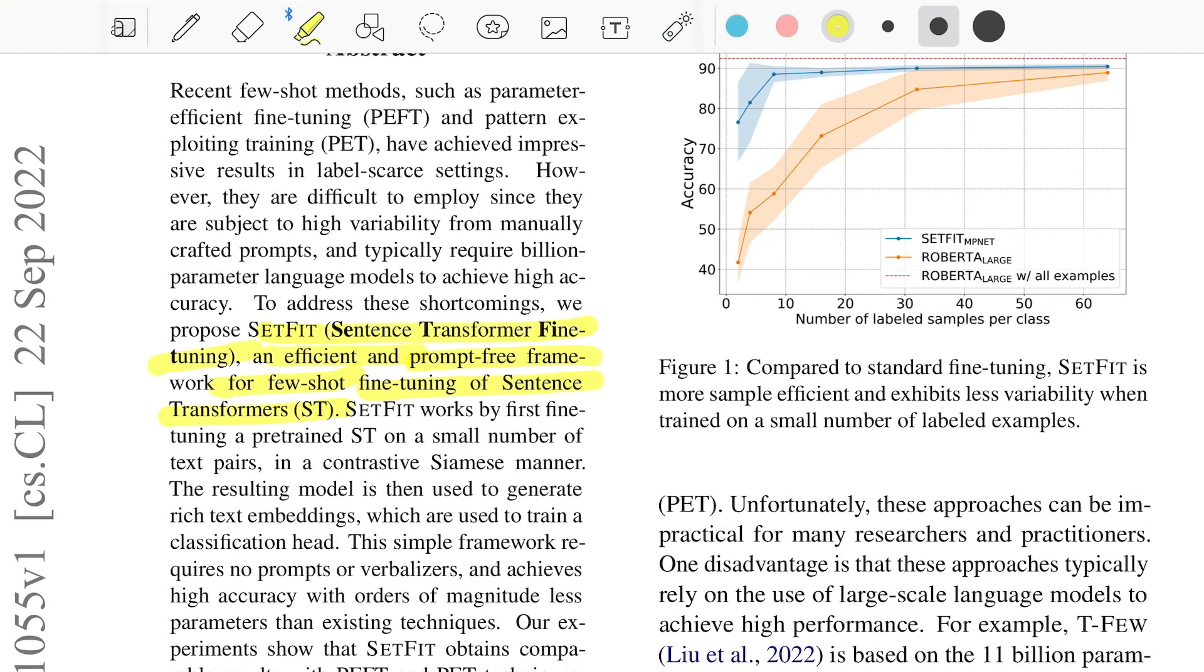It's a two-step process. The first step is to use a pre-trained sentence transformer model and fine-tune it on your labeled dataset, which is like 10 to 15 per class label because we're talking about a few-shot scenario. The fine-tuning of the sentence transformers happens in a contrastive learning way.